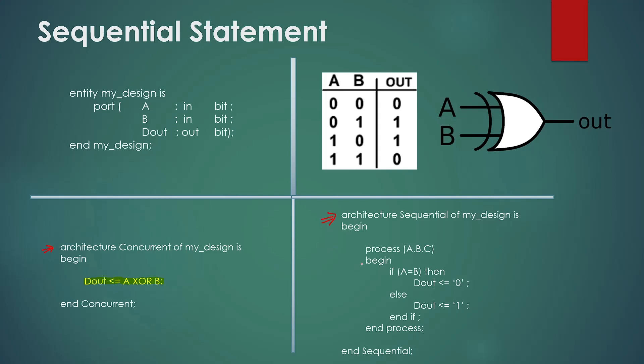It is sequential and inside the process with the IF condition. So the function is: if input A equals to input B then d_out gets the value 0, else d_out gets the value 1, end IF, end process.